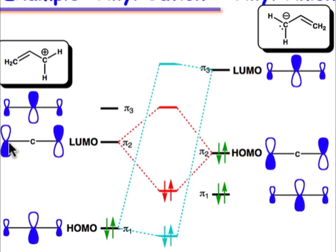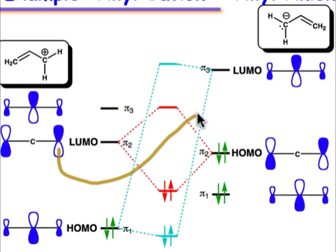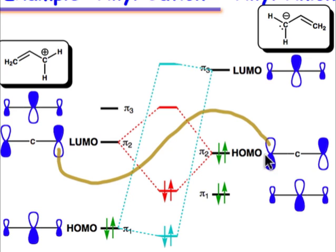In this case, because the molecules are symmetrical, the two coefficients happen to be identical in size, so we don't need to worry about size. All we need to do is make sure that the lobes come together with the same sign, so that when we multiply those two coefficients, we get a positive term in the equation that describes the energy of interaction. That's the way they should come together.